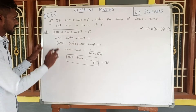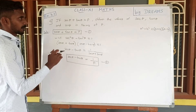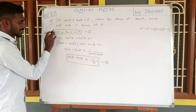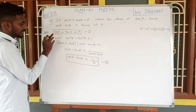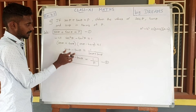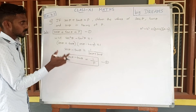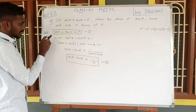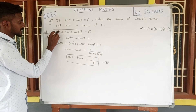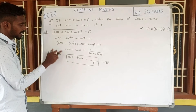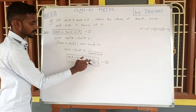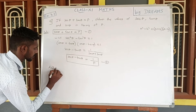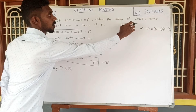From conditions 1 and 2, we have P and 1 by P. We will add secant theta plus tan theta and secant theta minus tan theta. By adding equations 1 and 2, we will be able to get the value of secant theta.